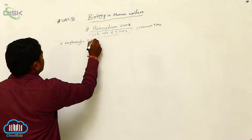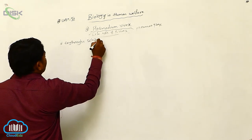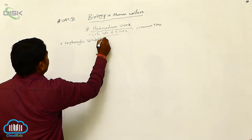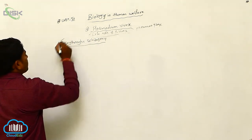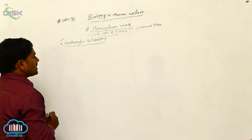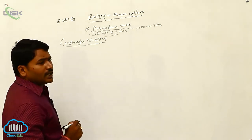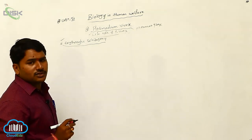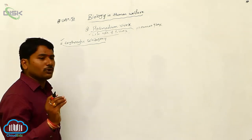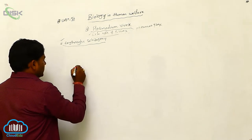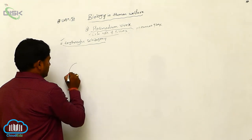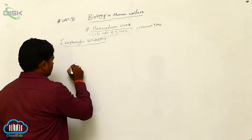Erythrocytic schizogony. Erythrocytic schizogony begins two options. These are RBC, for example.